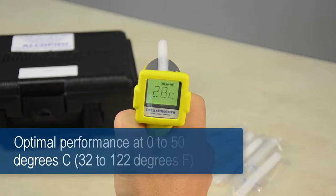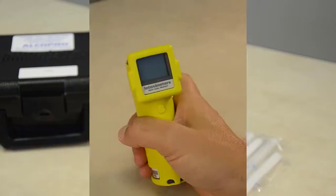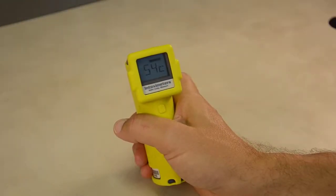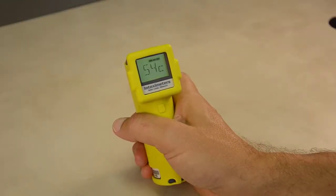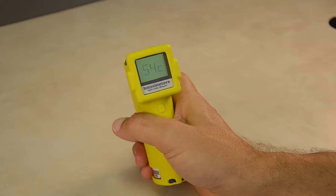The AlkaSensor FST is designed for optimal performance at instrument temperatures of 0 degrees Celsius to 50 degrees Celsius, which is equivalent to 32 to 122 degrees Fahrenheit. If the temperature is outside of the proper operating range, the device will indicate a temperature out of range message before powering off.